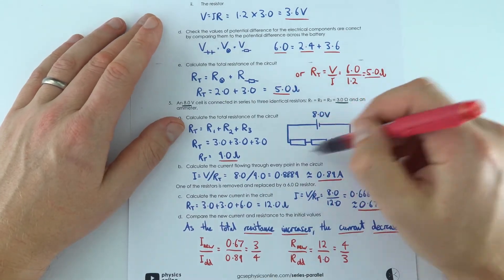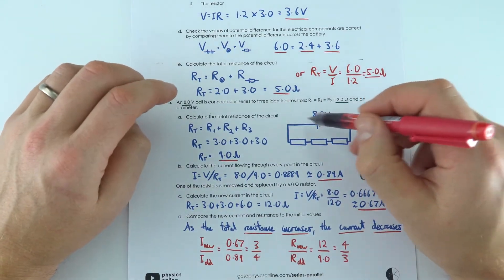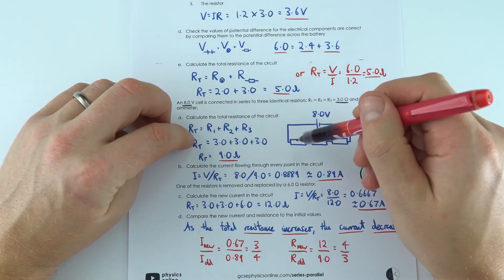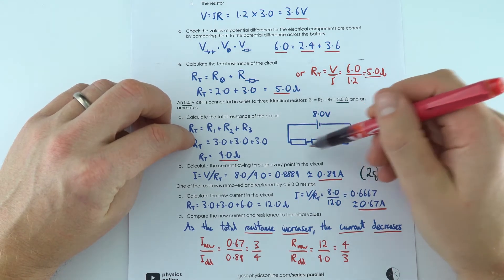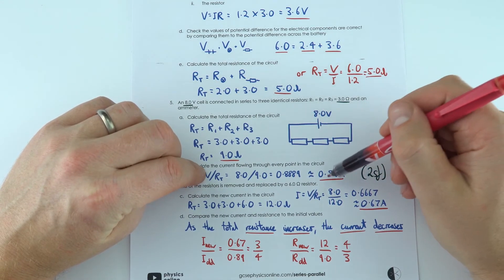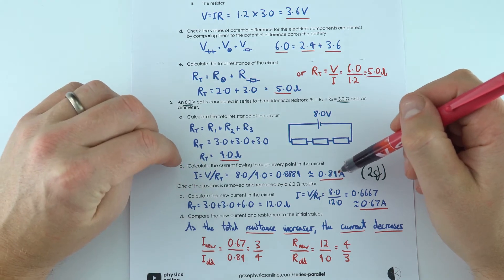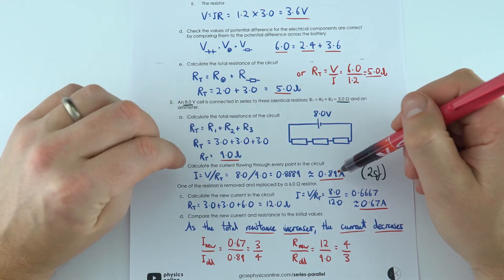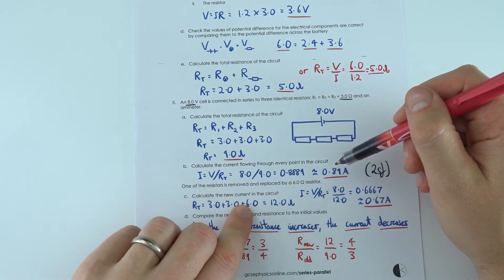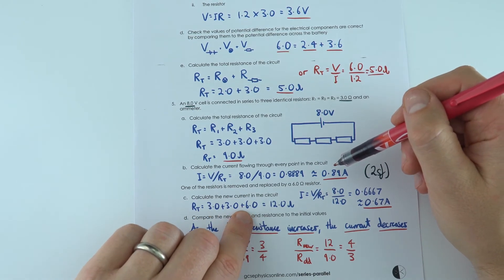For this one over here I drew the circuit, even though it didn't tell me to it's still useful to put it in, and again we're just adding up individual resistances to find the total resistance. We can then do that to find the total current flowing through the circuit, and also we can do the same thing when you have a different resistor rather than the 3 ohm resistor.